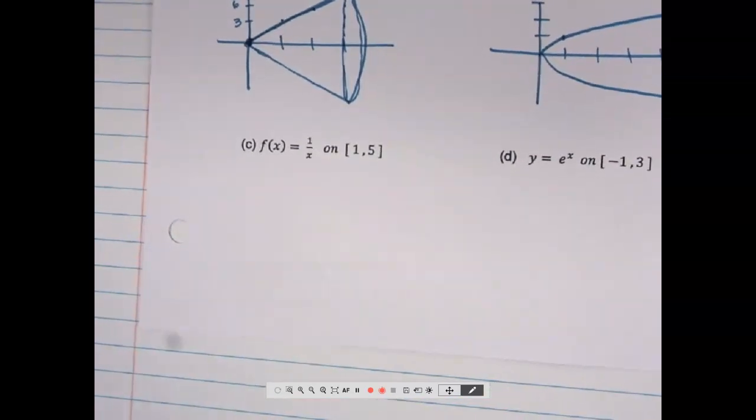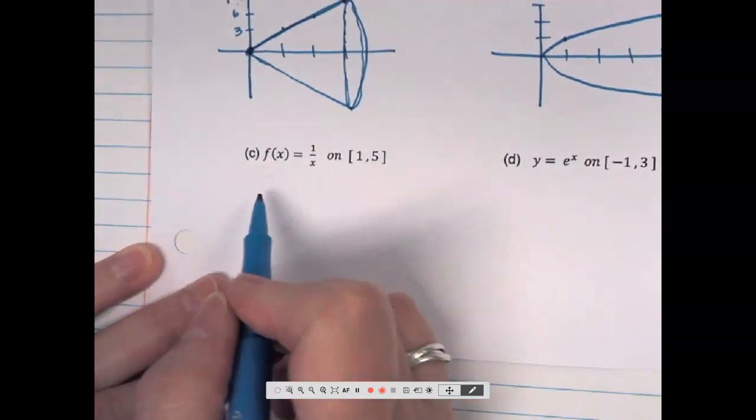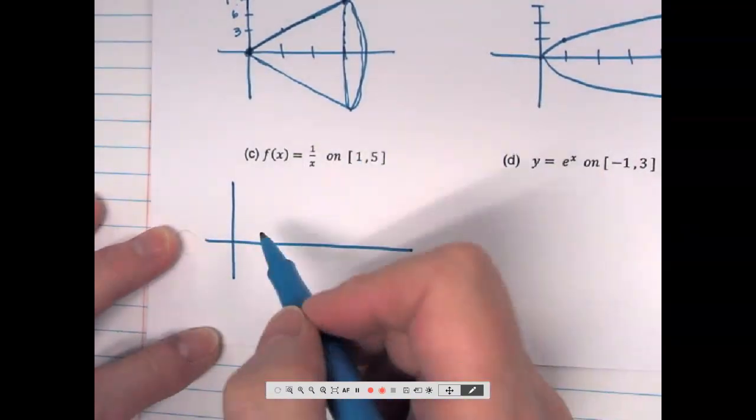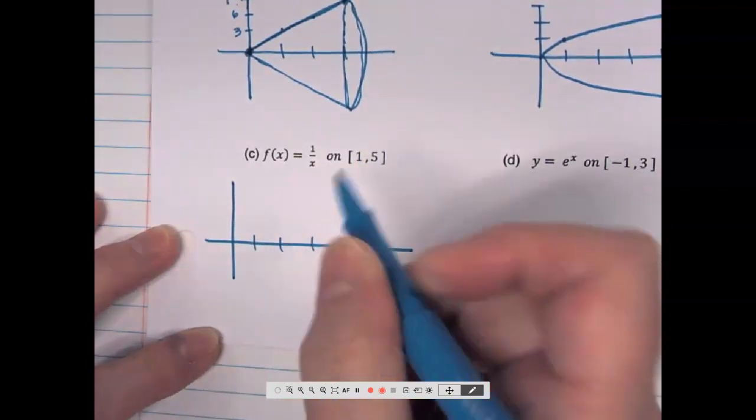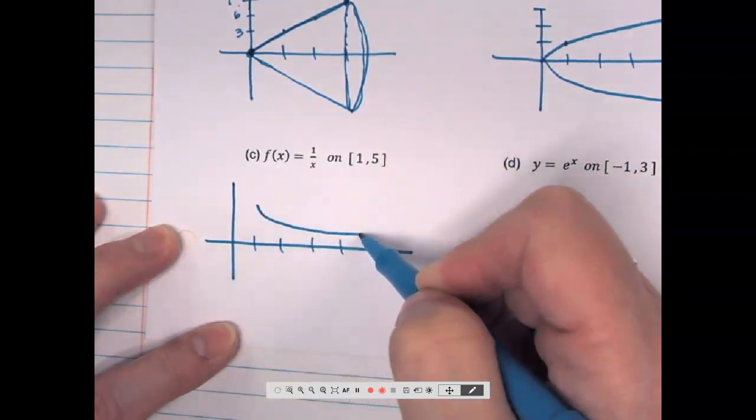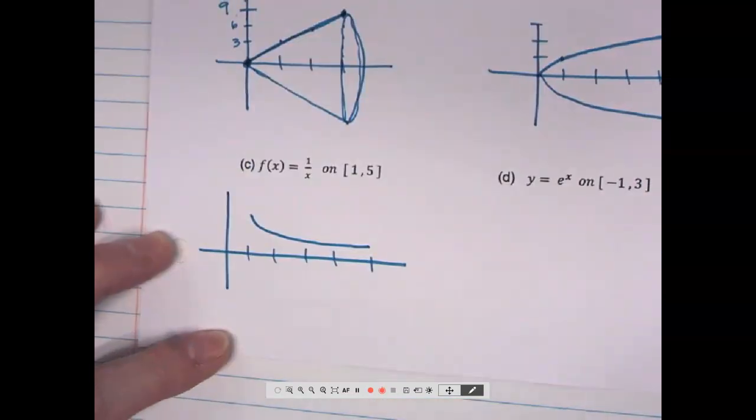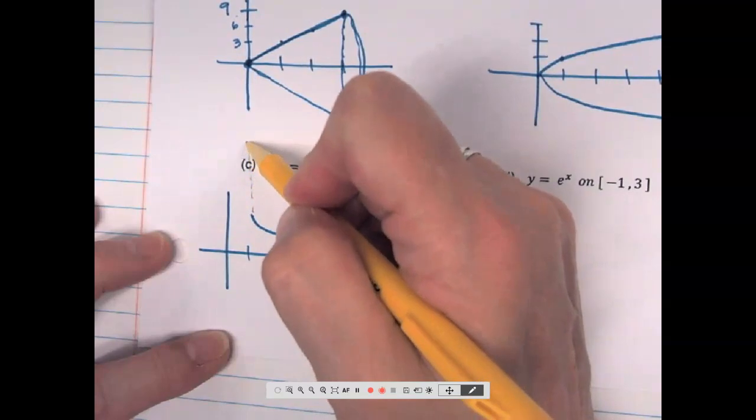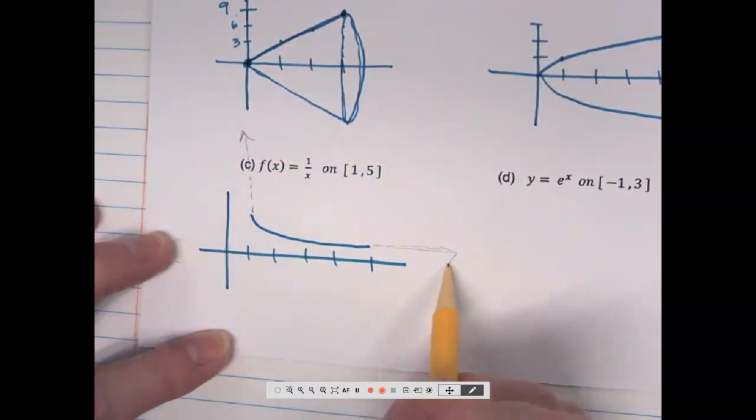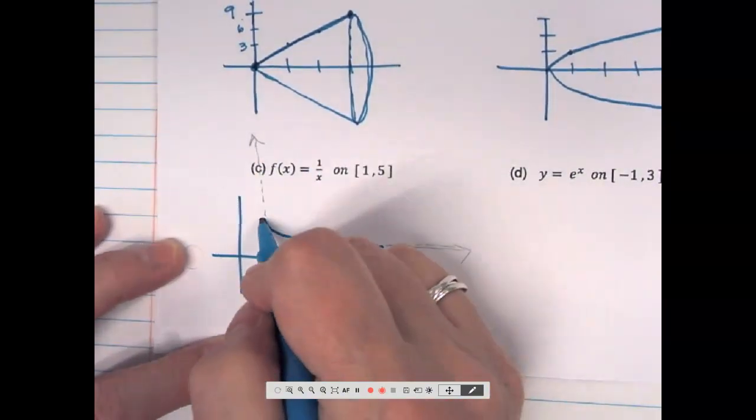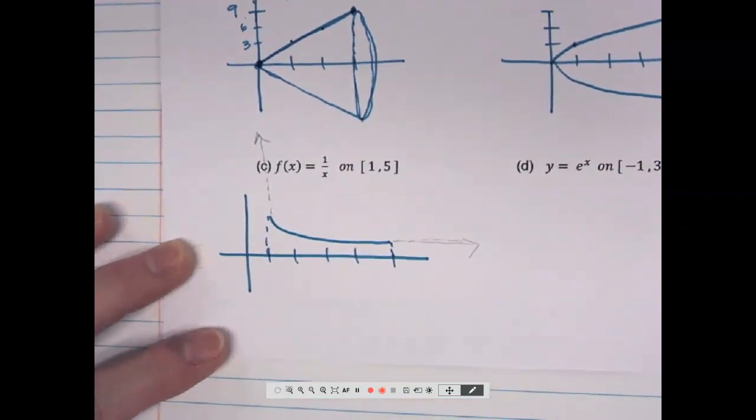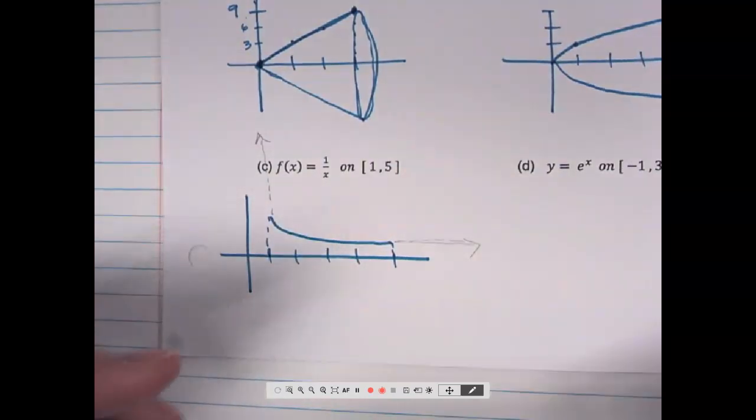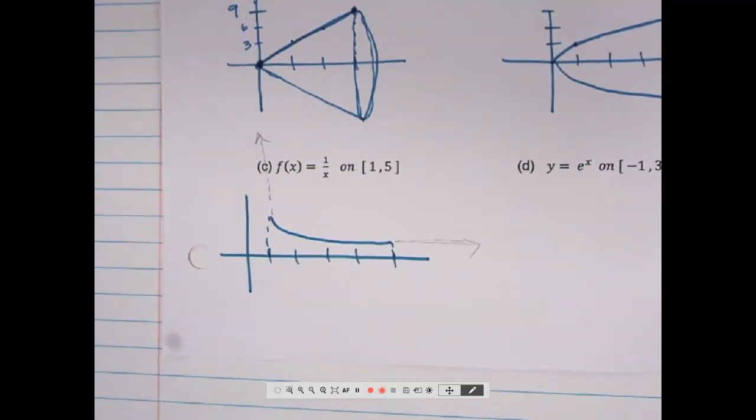1 over x. What does this thing look like? It's a hyperbola. You've got the piece of it in the first quadrant and then the piece in the third quadrant. We're going from 1 to 5, so we're just dealing with the first quadrant. So I've got like 1, 2, 3, 4, 5, something like that. It would keep going up like this and it would keep coming down like that. But I just want this little chunk.